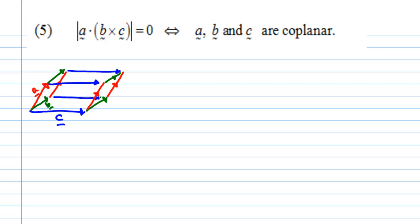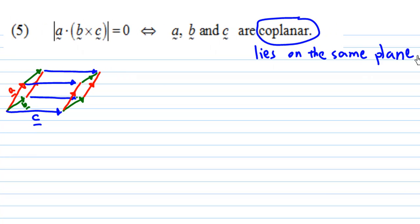Now what is the meaning of coplanar? The meaning of coplanar means A, B, C lies on the same plane. That means you can find a plane containing A, B and C. Why is this so?